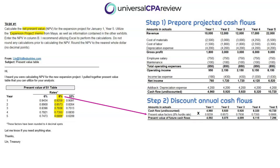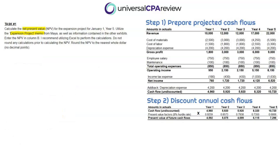For example, in year one the undiscounted cash flow was $4,960. From a present value perspective at 8%, the factor is 0.9259, which gives us a present value of $4,592. We apply the same logic for all five periods. Step two gives us the present value of future cash flows from operations, and now we move to step three — calculating the actual net present value.